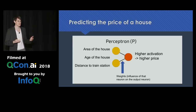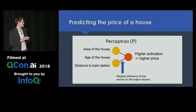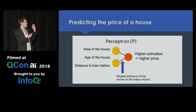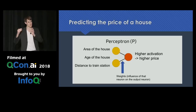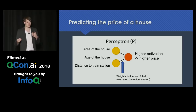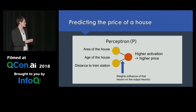The easiest way to start is to say: let's predict the price of a house. As input factors you have the area of the house, the age of the house, and the distance to a train station. Then you have weights which influence the price. We would have one neuron which becomes very active when the price is high and less activated — maybe even negative — if the price would probably be low. So you multiply the area of the house by a weight, and that influences the price directly.